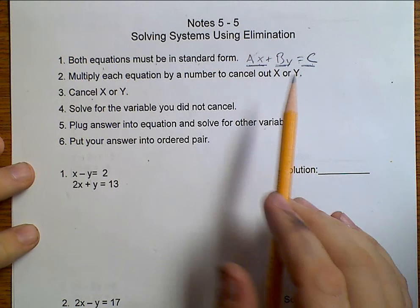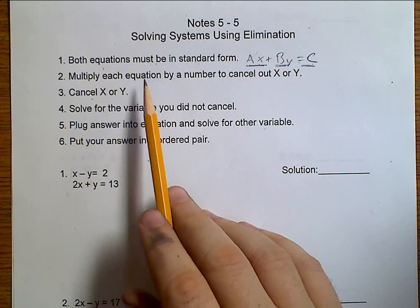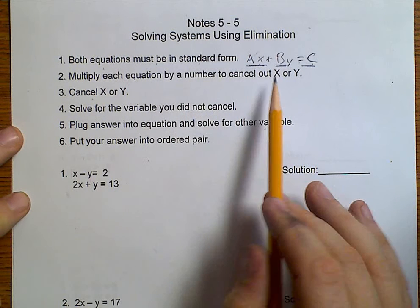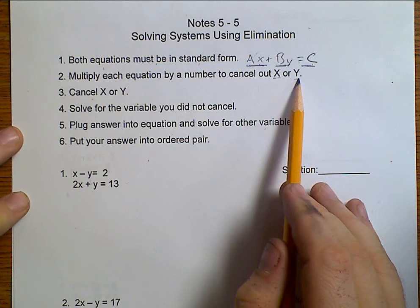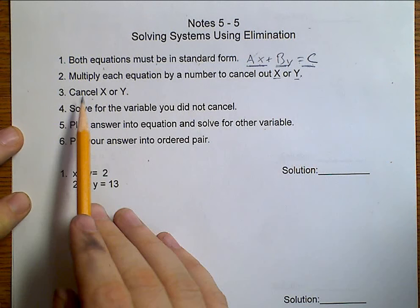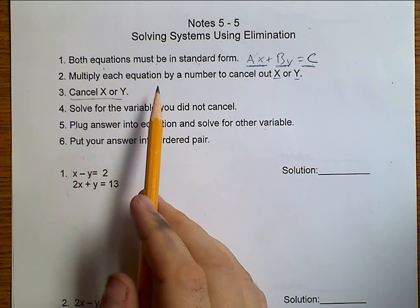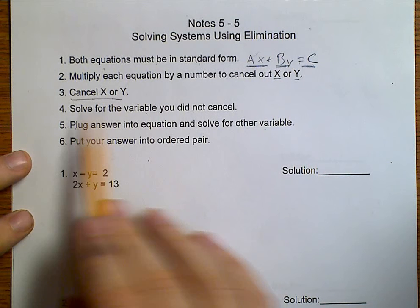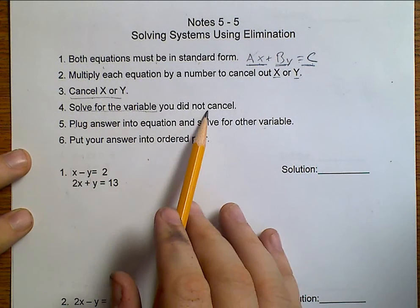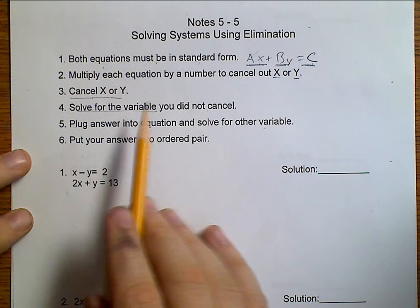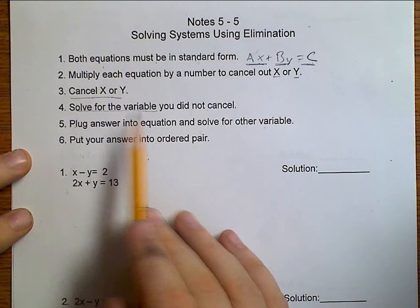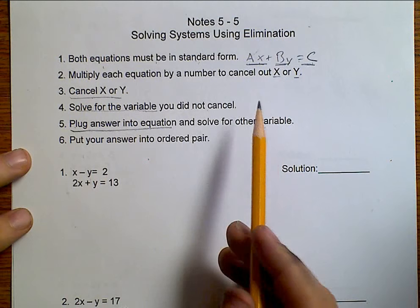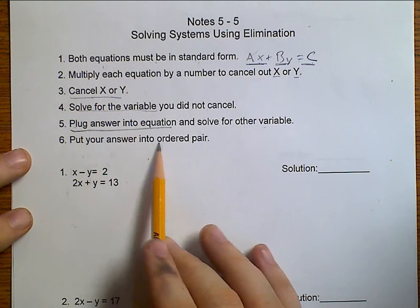Next, we're going to need to multiply each equation by some number in order to cancel out either X or Y. Then, we'll cancel them. Once we've done that, we can solve for a variable. We're going to solve for the one we didn't cancel. Then, we're going to plug what we got into our equation and solve for the other variable. Last, we're going to put our answer into an ordered pair.